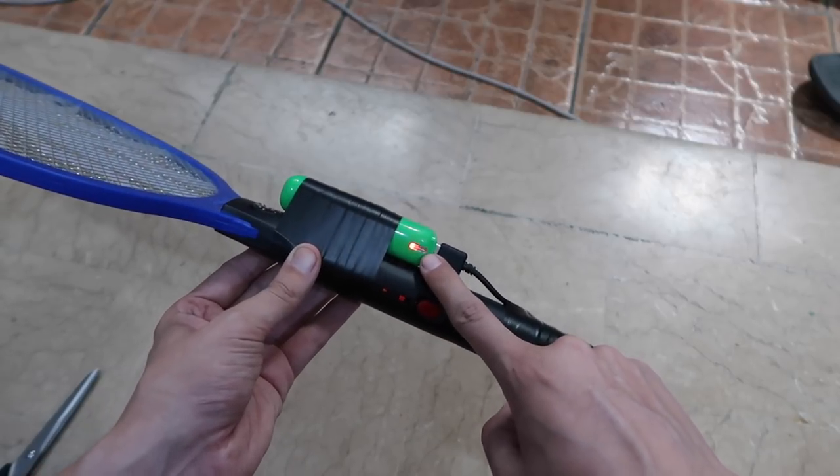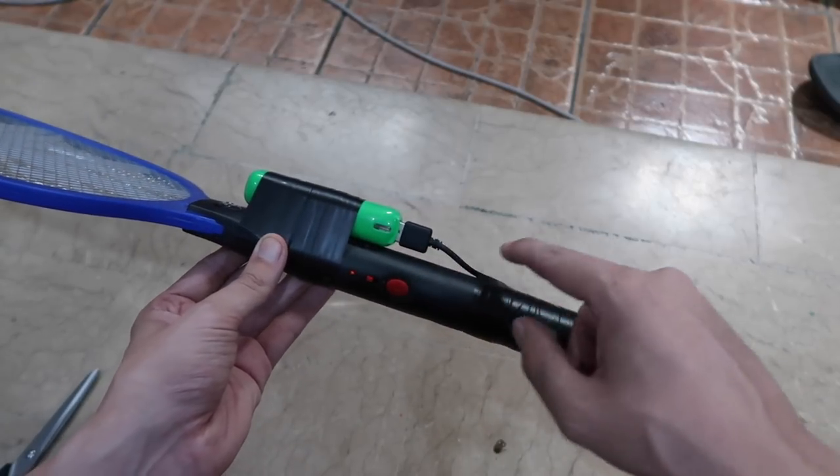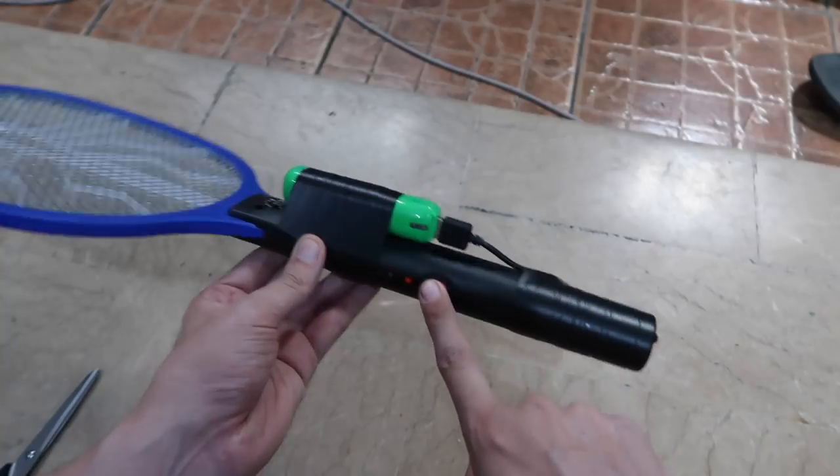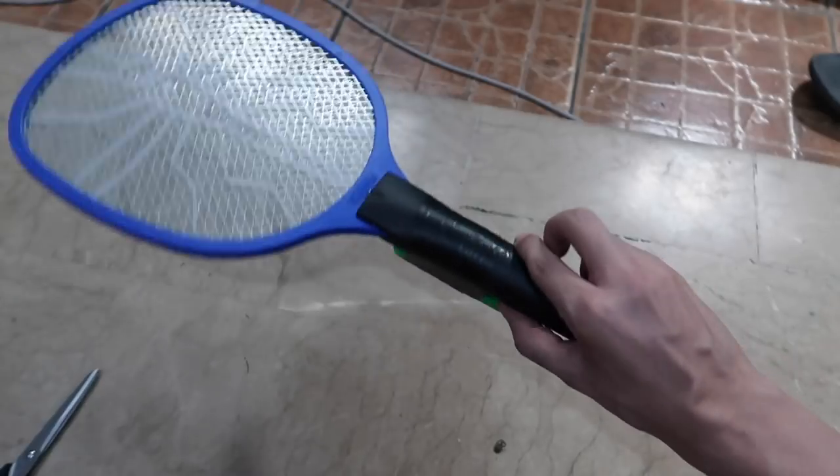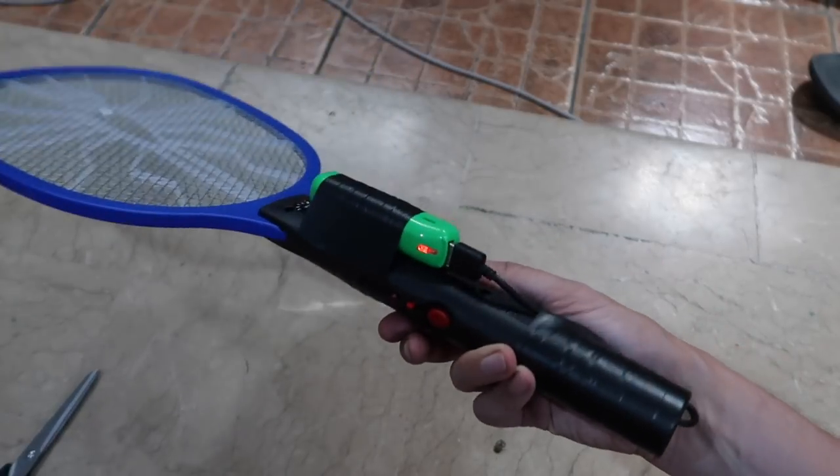This will automatically turn off this power bank and then when I press the button it turns on again. There you go it turned off. So if I press the button the racket lights up and the power bank turns on. So it's a good solution actually and this will last for a very long time.